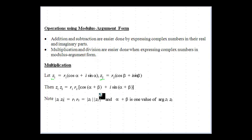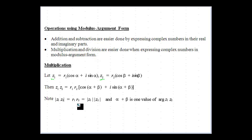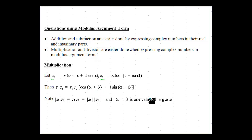The result is that we get cos of the sum of the arguments and i·sin of the sum of the arguments, still written in modulus-argument form. The key takeaway is that the modulus of z1·z2 equals r1·r2 — the product of the separate moduli — and the argument of z1·z2 is alpha plus beta.